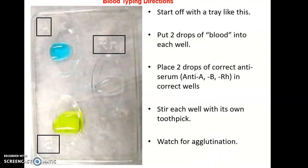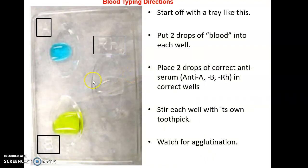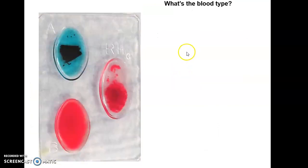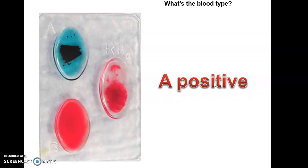For the blood type lab activity done in person, you have a tray with three wells. You put anti-A antibodies in well A, anti-B antibodies in well B, and anti-Rh antibodies in well Rh. You then put two drops of a patient's blood into each well, stir well with a toothpick, and wait to see if you see agglutination. Here is an example of a test result — well A, well B, and the Rh well. This blood type is A positive: agglutination clearly seen in well A and the Rh well, nothing happened in well B.